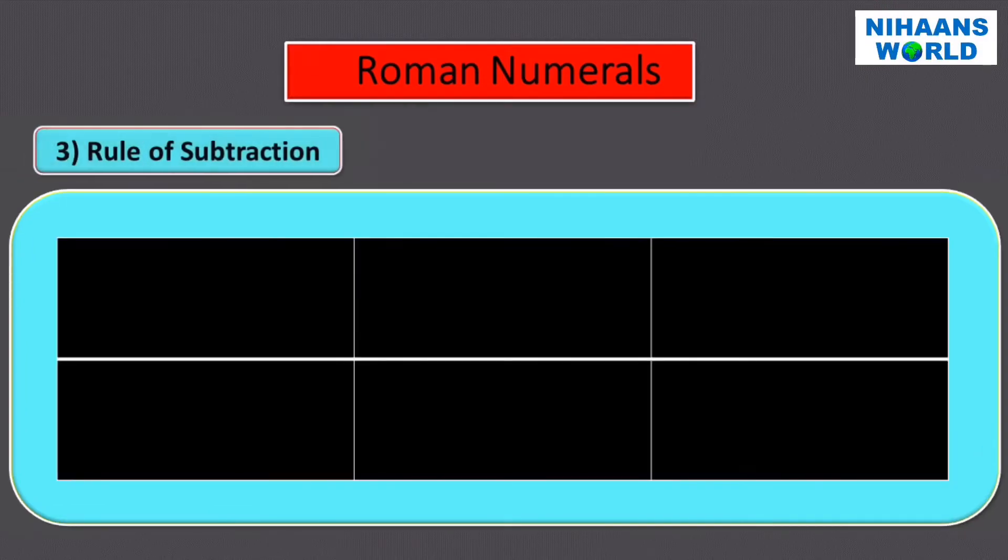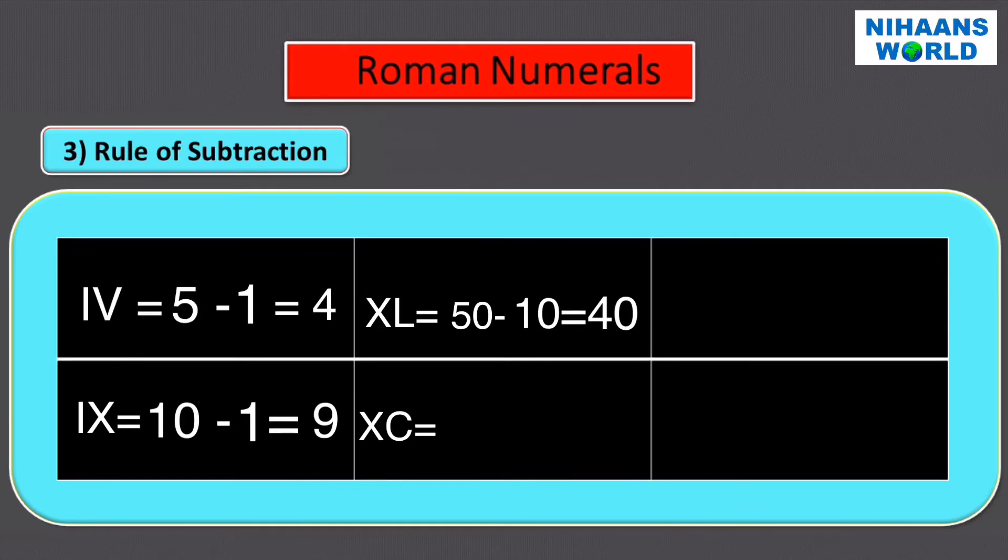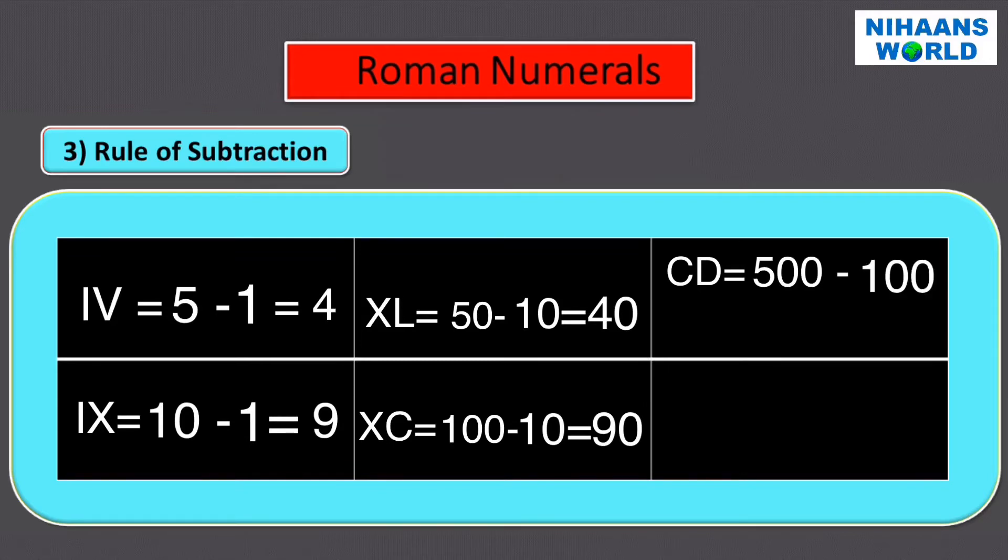Rule of Subtraction three: I, X, and C are used to subtract. There are six combinations. I V equals five minus one equals four. I X equals ten minus one equals nine. X L equals fifty minus ten equals forty. X C equals one hundred minus ten equals ninety. C D equals five hundred minus one hundred equals four hundred. C M equals one thousand minus one hundred equals nine hundred.